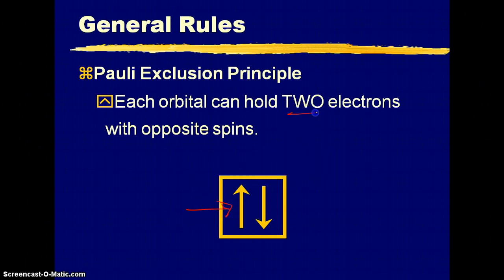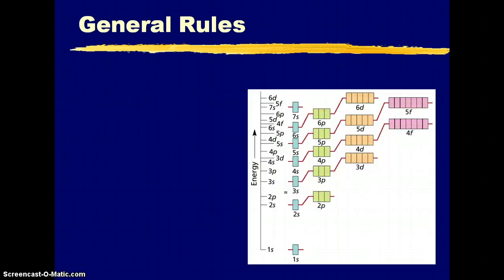Each box can only get two electrons, and the electrons have opposite spins. So one spins up, the other spins down, so we have to make sure that we indicate that as well.